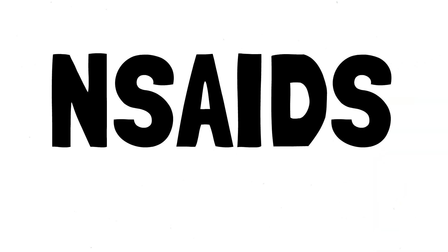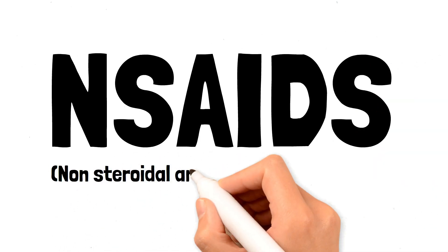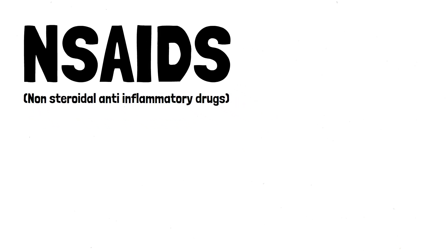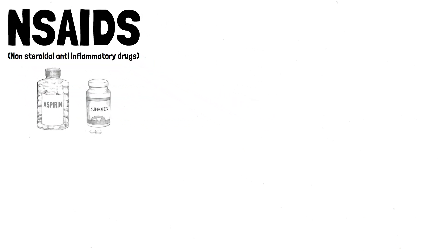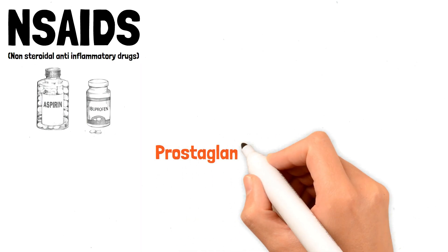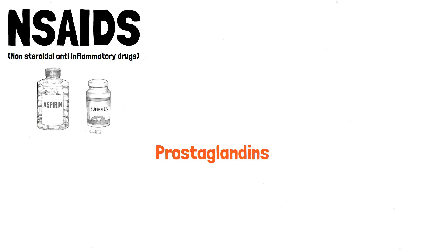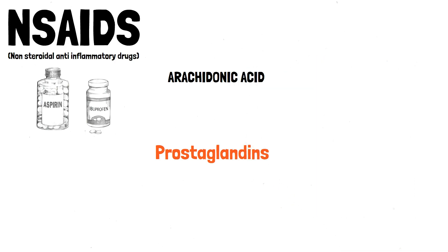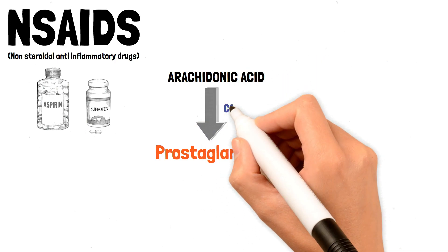Let's discuss how NSAIDs cause acute gastritis. NSAIDs are non-steroidal anti-inflammatory drugs — for example aspirin or ibuprofen. Whenever we take these NSAIDs, they involve a direct toxic effect damaging the cells. Apart from that, they indirectly cause damage as well. We have something called prostaglandins in every tissue of our body, which are derived from arachidonic acid. An enzyme called Cox-1 is involved in the conversion of arachidonic acid into prostaglandins.